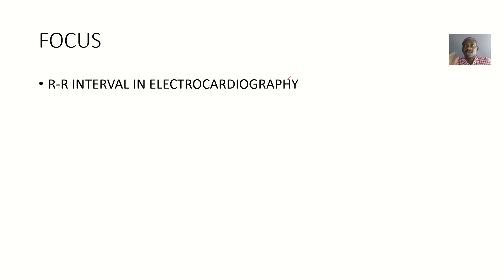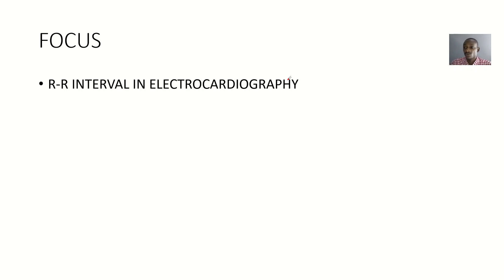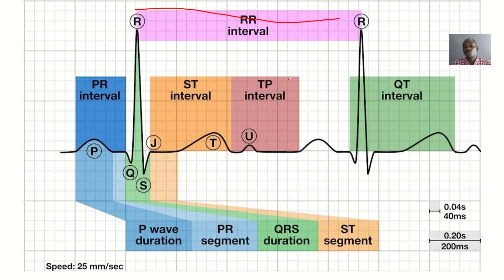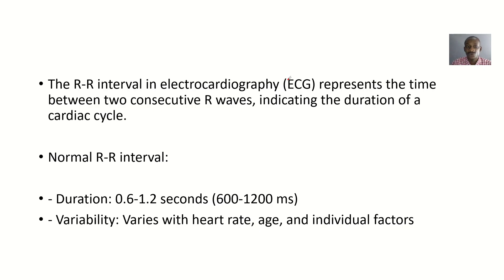Looking at the R-R interval, we are trying to define it. After definition, we are trying to look at how the normal R-R interval would be like. After looking at the normal, we are trying to look at how the abnormal R-R interval would look like. So let's define.